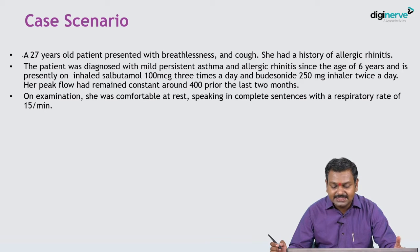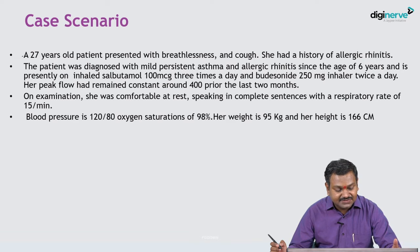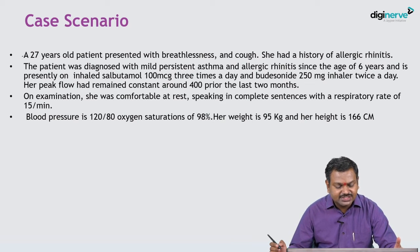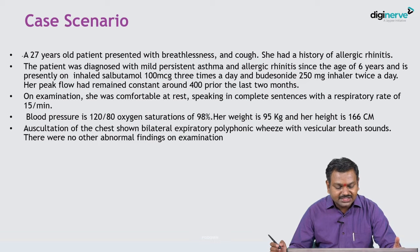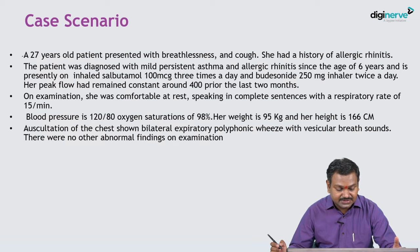Her peak flow rate has remained constant around 400 prior to the last two months. On examination, she is comfortable, speaking complete sentences. Respiratory rate is 15 per minute, blood pressure 120/80, oxygen saturation 98%. Her weight is 95 kg, height 166 cm — so she is obese. Auscultation shows bilateral expiratory polyphonic wheeze with vesicular breath sounds.